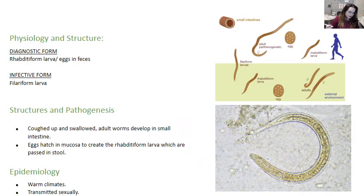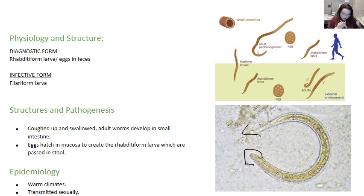Strongyloides stercoralis is basically another worm. You can see it shown here. There are a lot of different forms of it: there's the adult worm, there's the egg, there's the rhabditiform larvae, and then the filariform larvae.